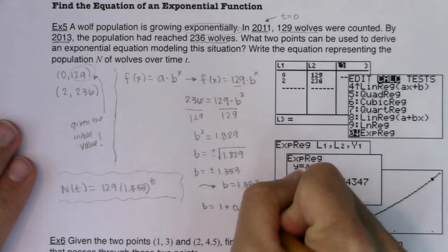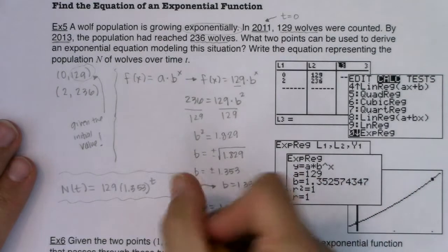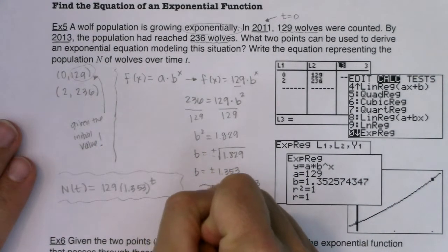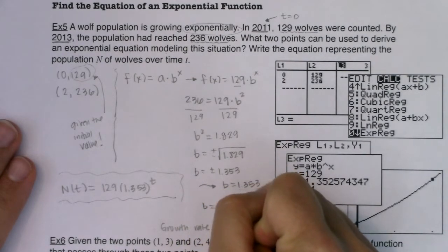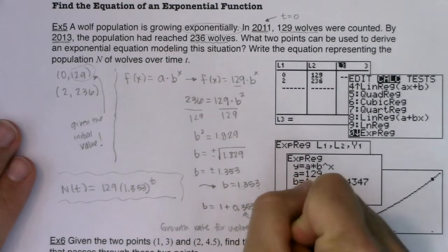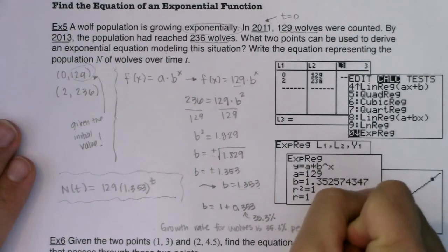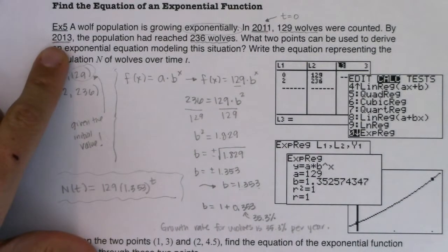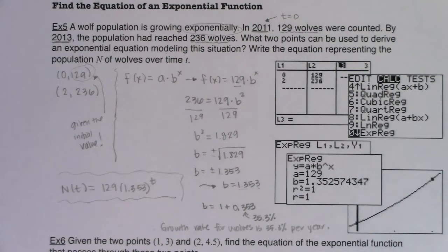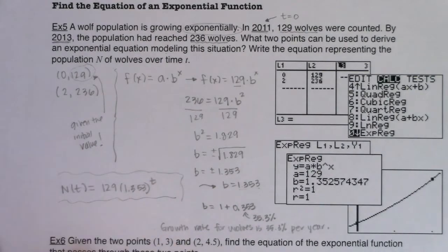And if I were to take this decimal and write it as a percentage, I could write it as 35.3%. So that actually means the growth rate for the wolves is 35.3% per year. So that's a hugely fast growth rate. You're growing by 35% a year. In a couple of more years, these wolves are going to be everywhere. There's going to be tons of wolves out there because they're growing so fast. This is savagely fast.